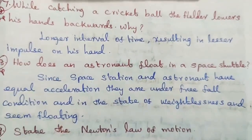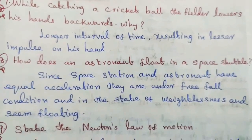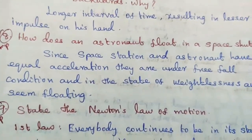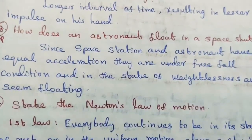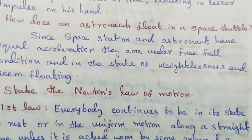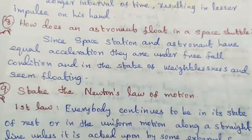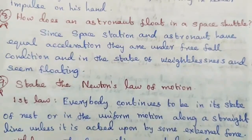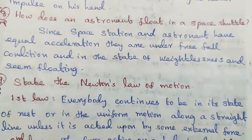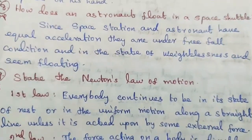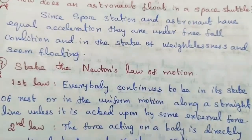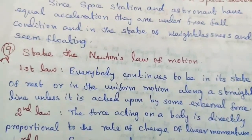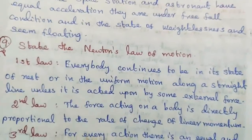Question number nine, important: state Newton's laws of motion. First law: every body continues to be in its state of rest or in uniform motion along a straight line unless acted upon by some external force. Second law: the force acting on a body is directly proportional to the rate of change of linear momentum. Third law: for every action there is an equal and opposite reaction.